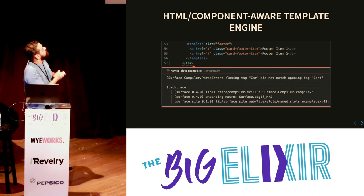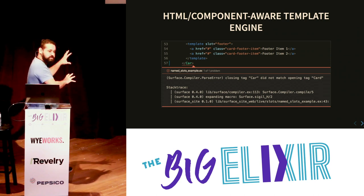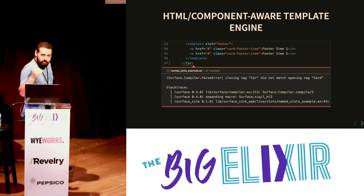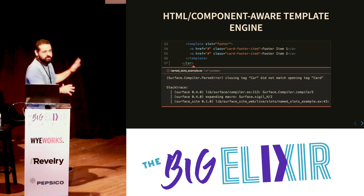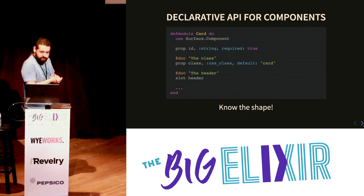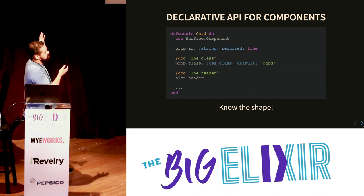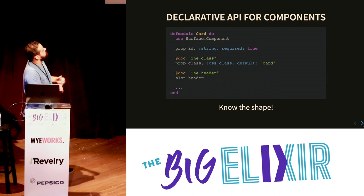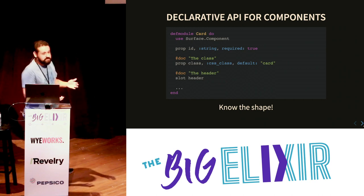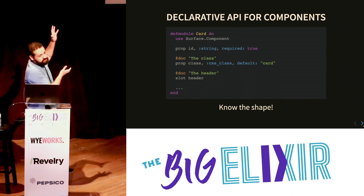Having this component-aware template engine, we were able to tackle the first problem: validating the structure of the HTML. After we created the parser, we were able to provide instant compile-time messages. If something went wrong with the structure, we were able to have a compile-time message. The declarative API was also introduced in Surface — now there was a way to define properties that should be passed as attributes to the component. You could define if a property is required, and if it's required and you don't pass it, it will raise a compile-time error.